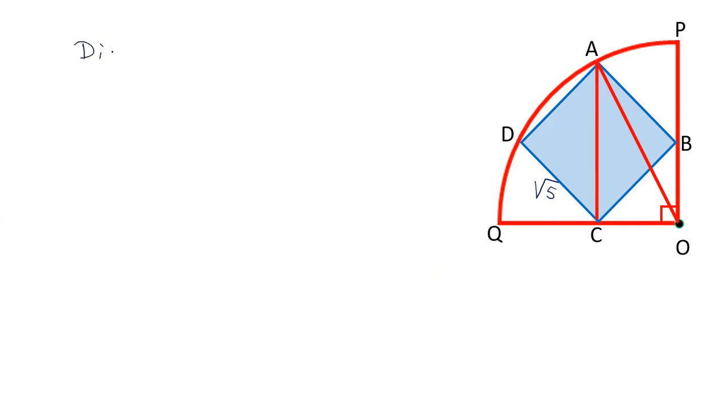Diagonal of a square is calculated as a√2, that is the side of square times √2. a is given as √5, multiply by √2, that is √10. So this is the length of AC.